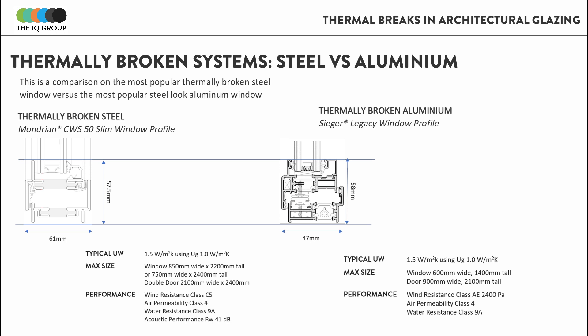Another useful comparison is a thermally broken steel system versus a thermally broken aluminium system. A steel-look aluminium system like the one shown here from Seager Legacy can be a really good alternative to thermally broken steel on some projects.